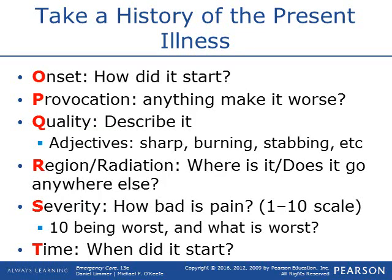Getting that history starts with the mnemonic OPQRST. Onset: how did it start, what were you doing when this began? Provocation: anything make it worse — for example, does raising your arms make chest pain worse, suggesting muscular versus cardiac? Quality: use adjectives — is it sharp, burning, stabbing? Region or radiation: where exactly is it and does it go anywhere else? Radiation means pain spreads continuously, like chest pain going into the shoulder and neck.